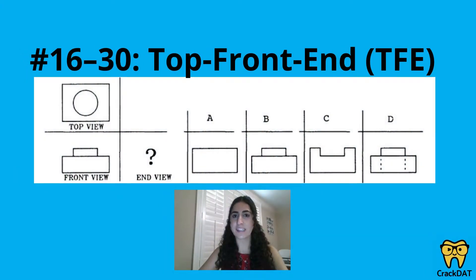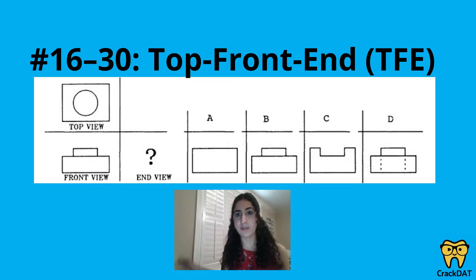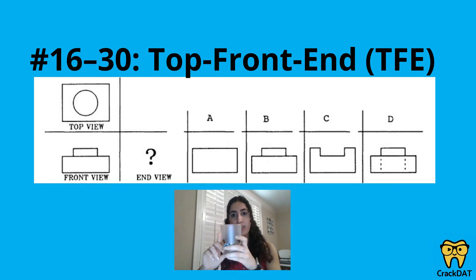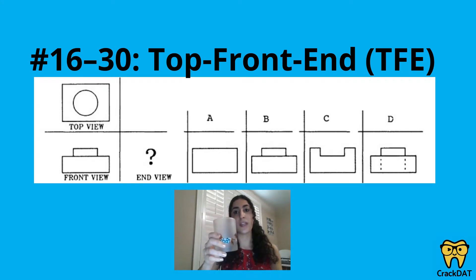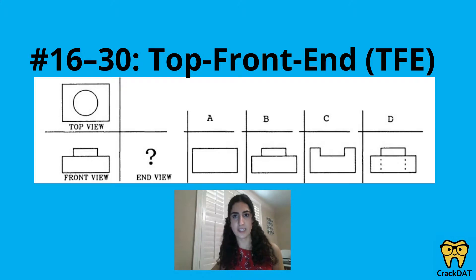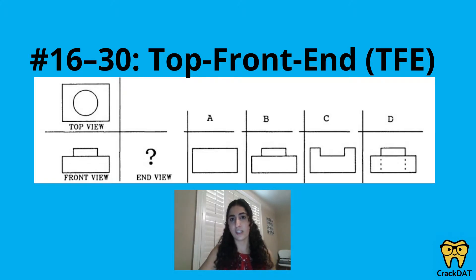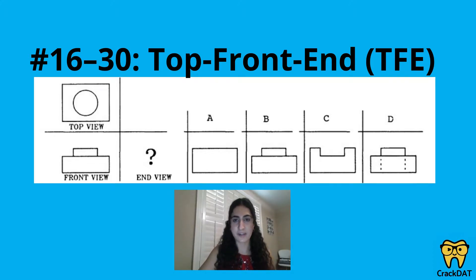Questions 16 through 30 are top front end questions. Every 3D object has a distinct view depending on whether you're viewing it from the top, from the front, or from the end. For example, viewing a cup from the top down you'd see a circular projection, but from the front or side you'd see almost a square projection. You'll be provided with two of the three possible views and required to determine what the missing view would look like by forming a mental picture of the object.